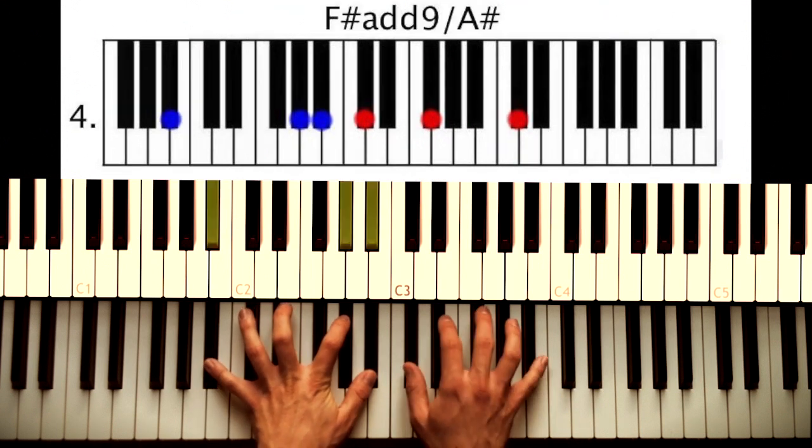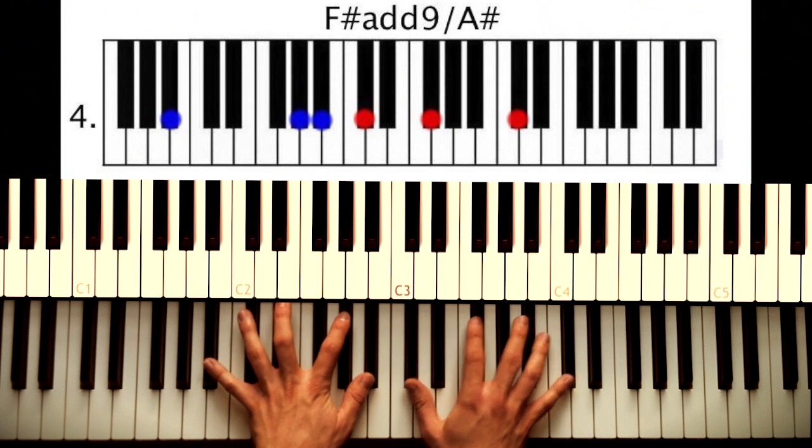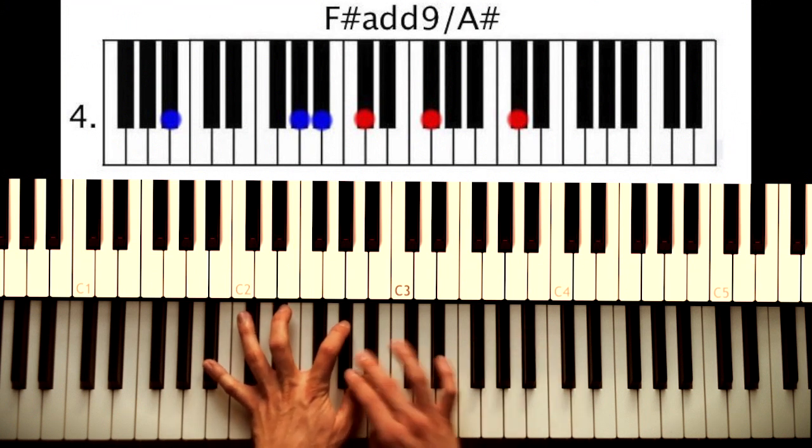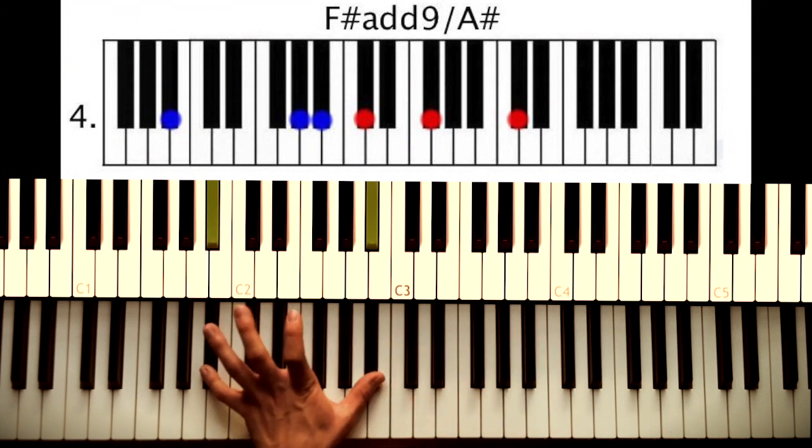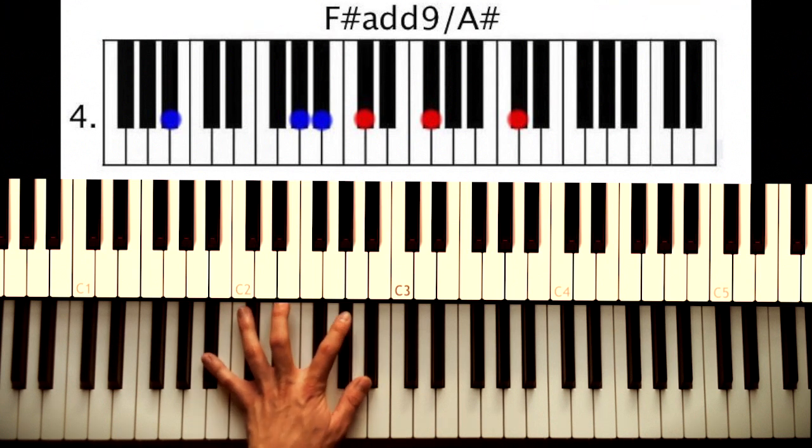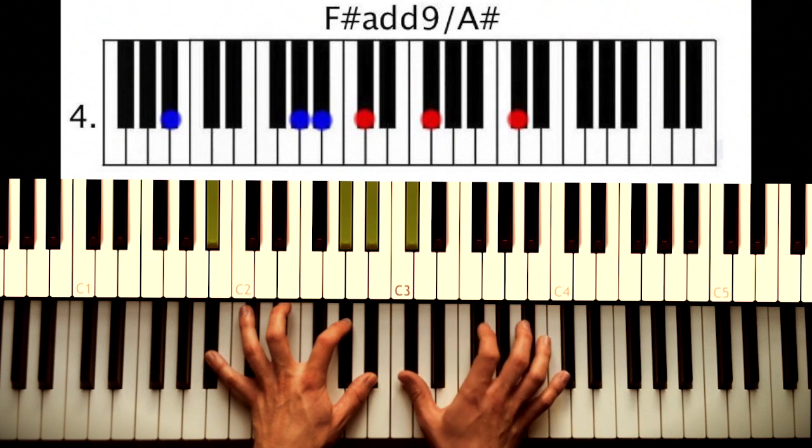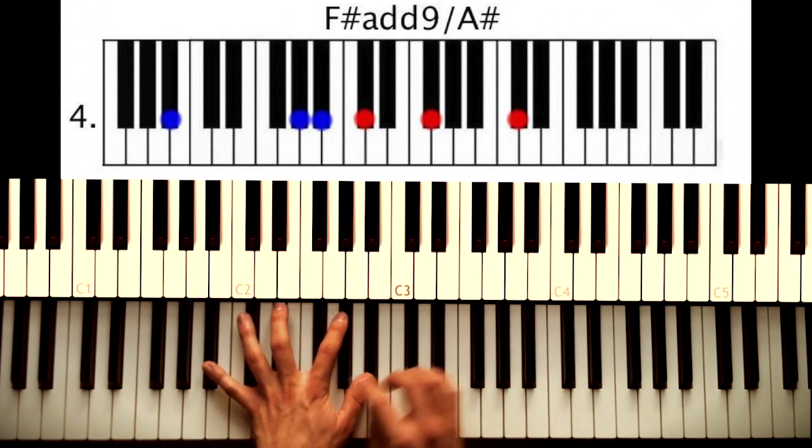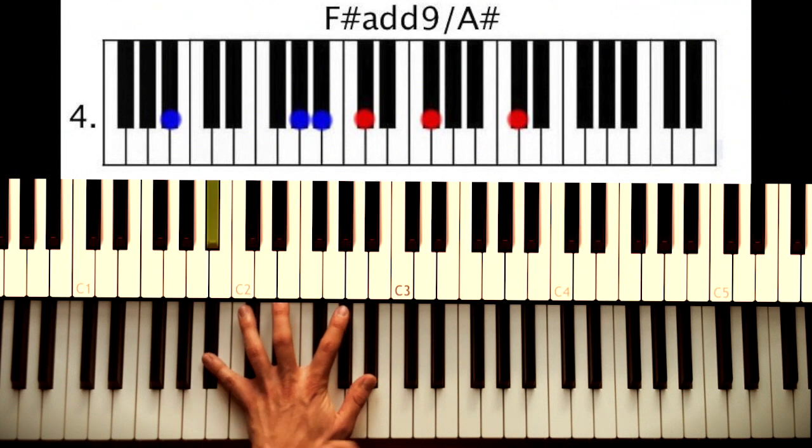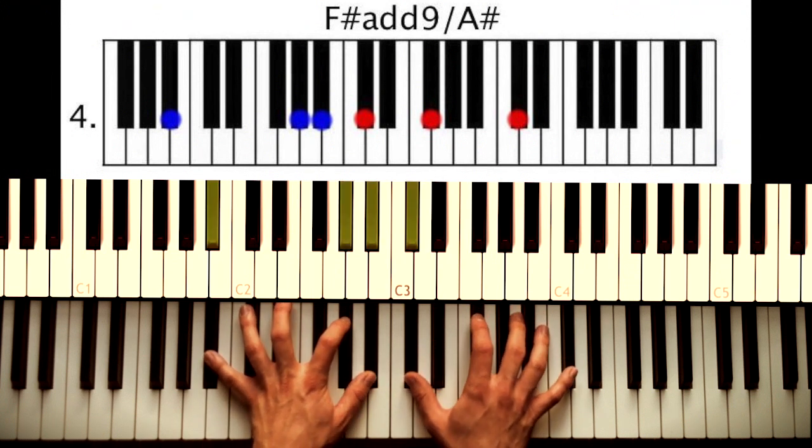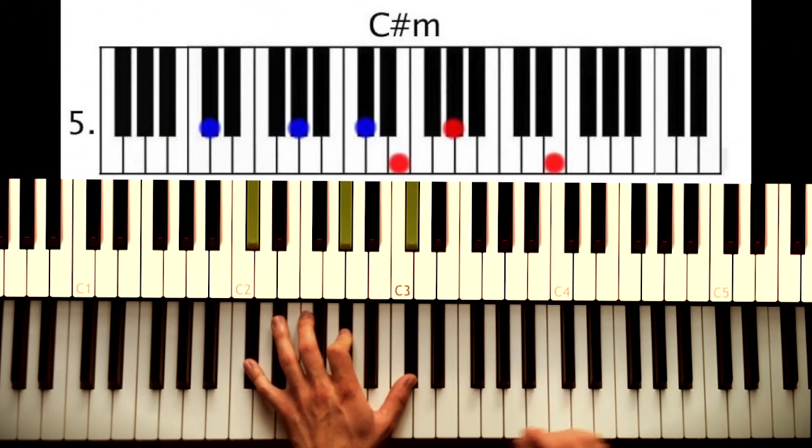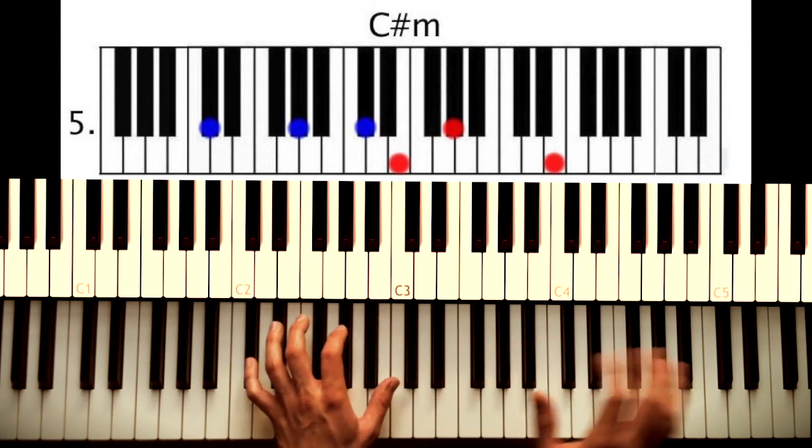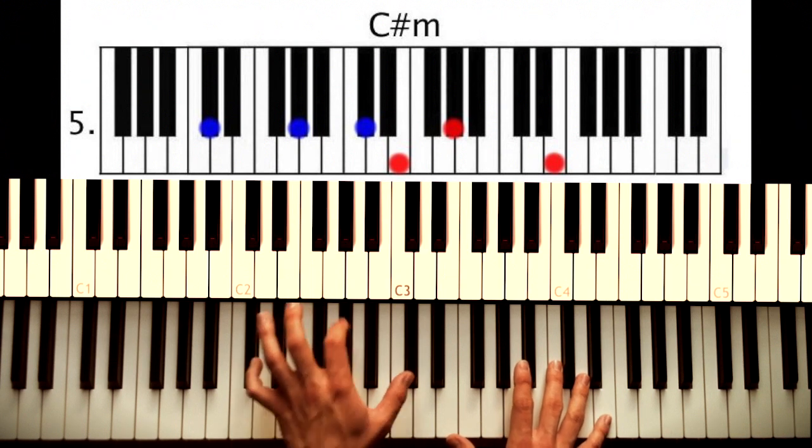Next chord is an F sharp chord over A sharp with an added nine. So we have an A sharp in the bass or B flat. The notes are B flats, A flat over here. Right hand plays D flat, G flat, and another D flat over here. Or if you want to call them sharps: A sharp, G sharp, A sharp, C sharp, F sharp, and C sharp. Just change the notes and keep doing that.